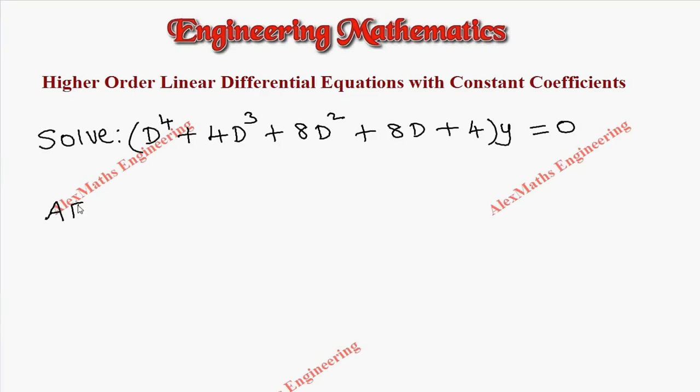As a first step, we have to write the auxiliary equation. This is nothing but m^4 + 4m^3 + 8m^2 + 8m + 4 = 0.